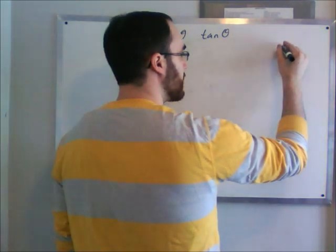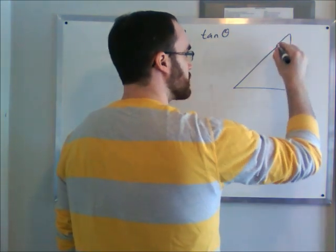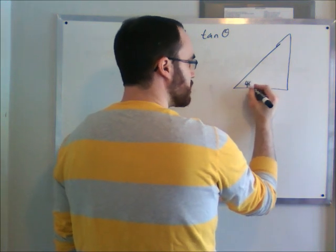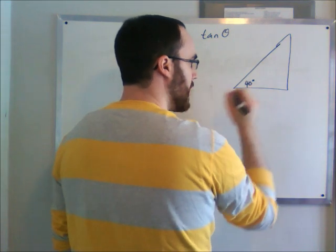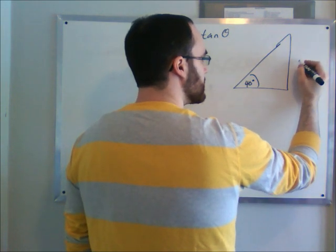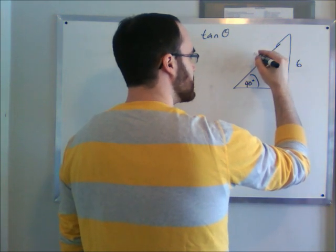So again we'll have our right angle triangle here, that's our basic simple case, and let's say that we know this angle is 40 degrees. And we know that this side is 6 and this side is 10.